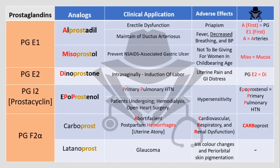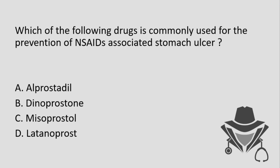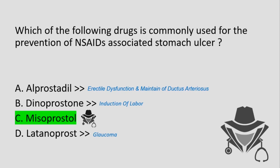We have finished discussing all clinically important prostaglandin analogues — their clinical applications, adverse effects, and mnemonics. Going back to the question: which drug is used for prevention of NSAIDs-associated stomach ulcer? The answer is misoprostol. Alprostadil treats erectile dysfunction and maintains the ductus arteriosus; dinoprostone is for labor induction; latanoprost treats glaucoma.